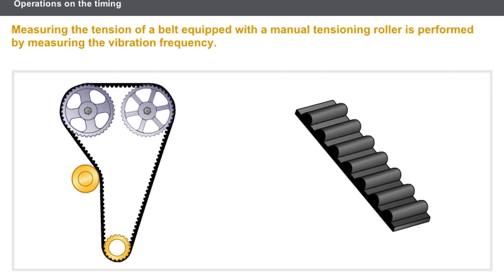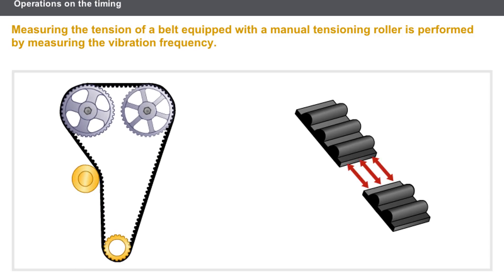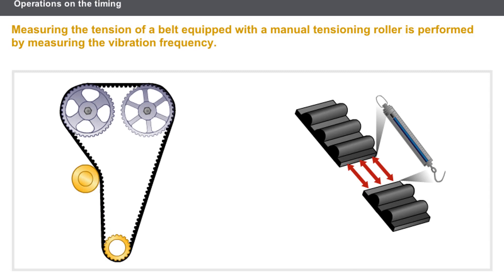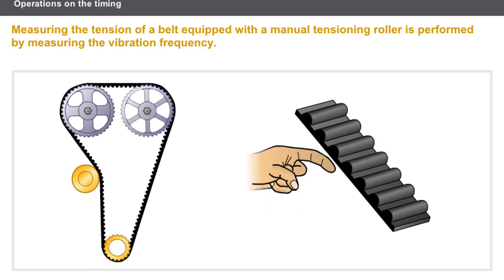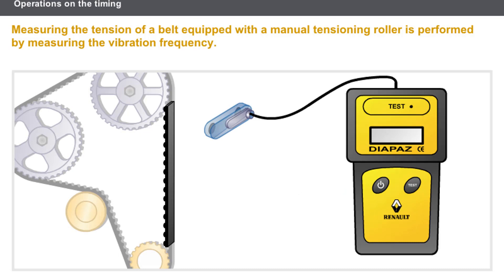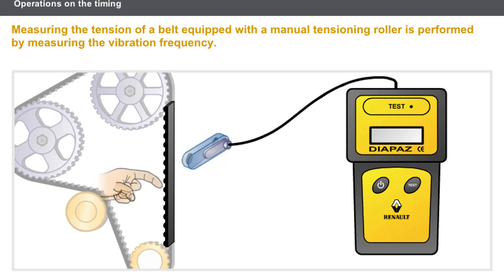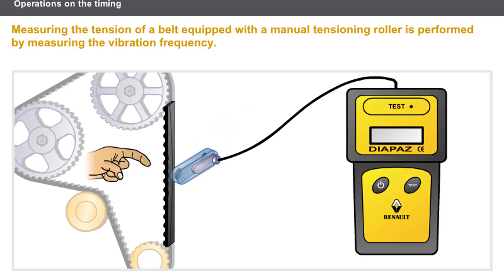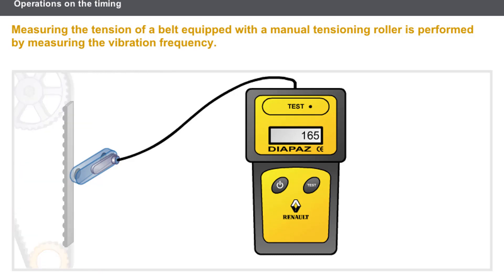Now let's look at measuring the belt tension. The tension is a force expressed in newtons present on the inside of the belt. Belt tension cannot be measured directly. In the case of a manual tensioning roller, a vibration is measured depending on the tension. When a belt is tensioned and under load, it vibrates at a frequency proportional to the tension. There is therefore a direct relationship between the vibration frequency of the belt, the length of belt used, and the tension in the belt. It is this vibration frequency that is measured.